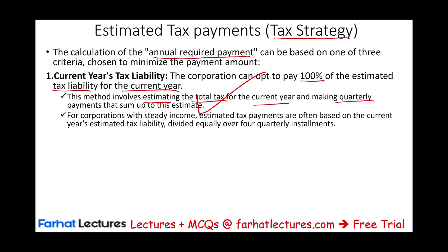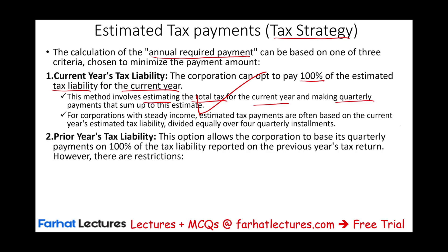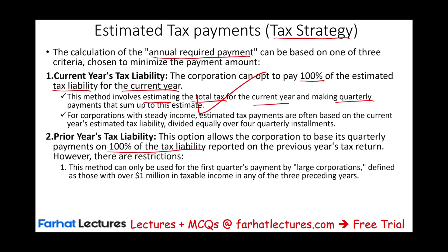This method is good if you can estimate your taxable income and your taxable income is pretty steady. The other method is paying 100% of the prior year tax liability, to avoid penalties. This option allows the corporation to base its quarterly payment on 100% of the tax liability reported in the prior year. However, there are restrictions to this method — it can only be used if you are not a large corporation.